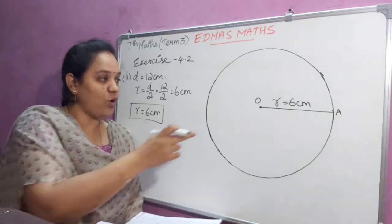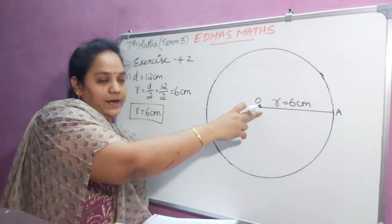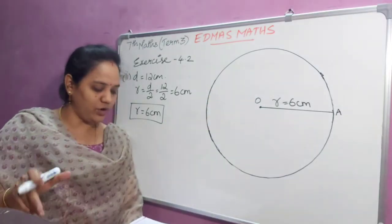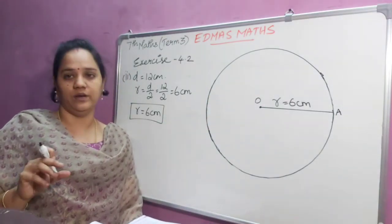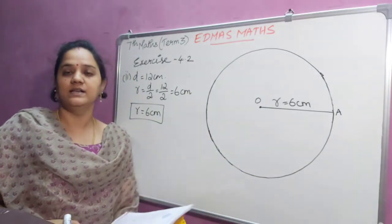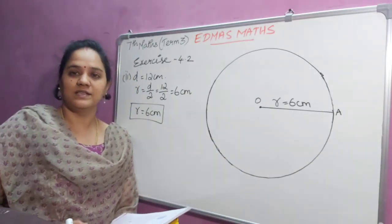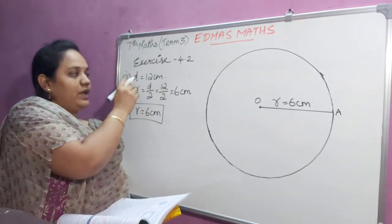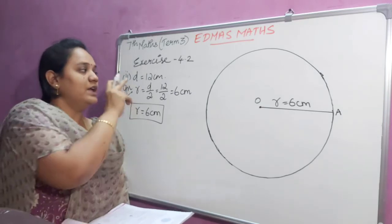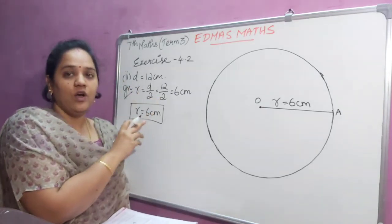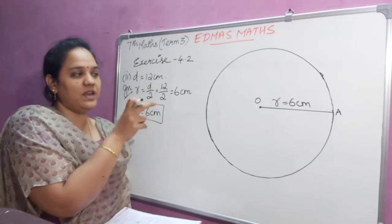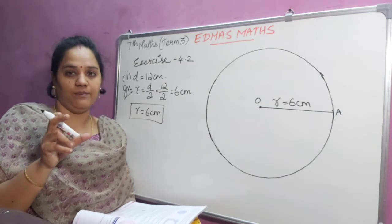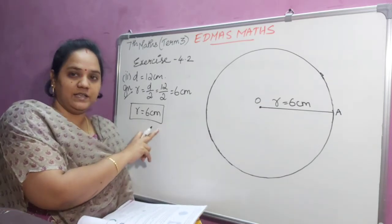At the center O, hold the compass needle and place the point on the compass, then slowly rotate the compass around to get a circle. You have to write the given part first — write: given D equal to 12 centimeter. If diameter is given, we have to divide it by 2 to find out the radius. We need to write the radius.